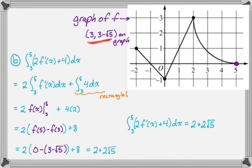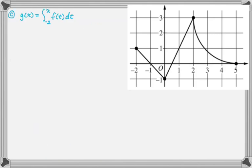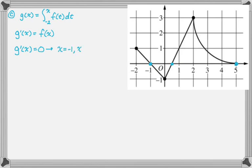The next part is basically a candidates test question. We're told g(x) is the integral from negative two to x of f(t) dt, and we want the absolute maximum value of g on the closed interval from negative two to five. From this, g′(x) equals f(x) — take the upper bound, plug it in, multiply by the derivative of the upper bound which is one. Setting g′(x) = 0, I look at the graph of f and find critical points at x = −1, x = 1/2, and x = 5.